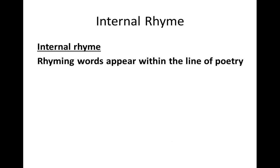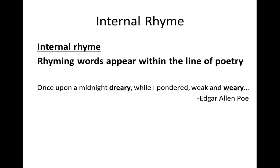Internal rhyme, again as the name suggests, occurs when rhyming words appear within the line of poetry — not just at the ends of lines. Our example comes from Edgar Allan Poe's famous poem: 'Once upon a midnight dreary, while I pondered weak and weary.' Having that rhyme carry through a single line of poetry helps to make us feel like we're plodding along through this dreary night.